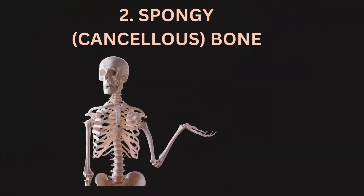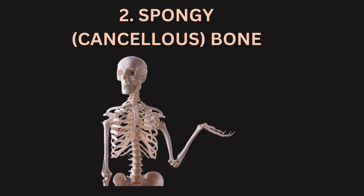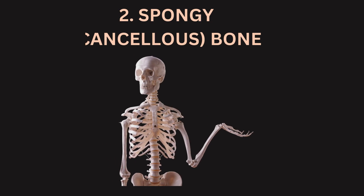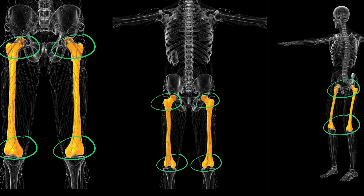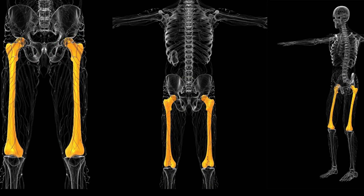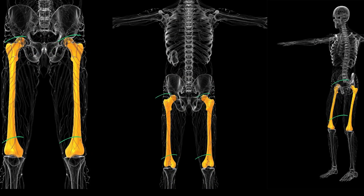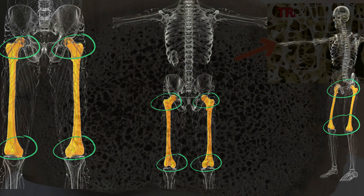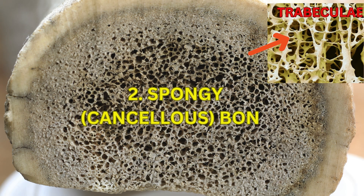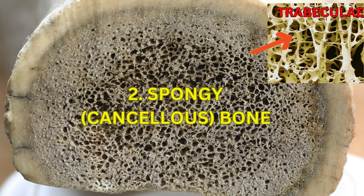2. Spongy (cancellous) bone. Location: spongy bone is found at the ends of long bones, as well as within the interior of flat and irregular bones. It is less dense than compact bone and contains trabeculae, which form a mesh-like structure.